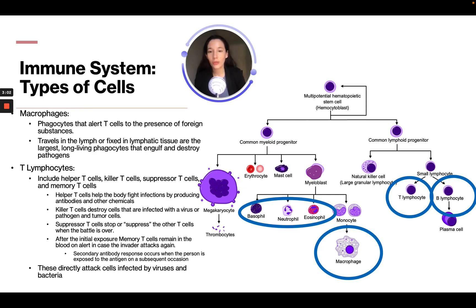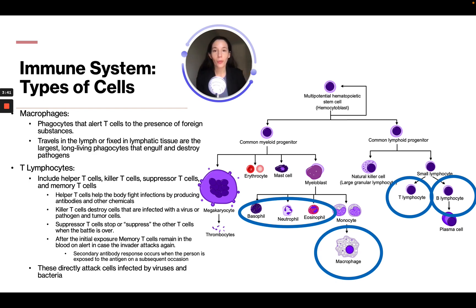T lymphocytes include helper T cells, killer T cells, suppressor T cells, and memory T cells. Helper T cells help the body fight infections by producing antibodies and other chemicals. Killer T cells destroy cells that are infected with a virus or pathogen and tumor cells. Suppressor T cells stop or suppress the other T cells when the battle is over. After the initial exposure, memory T cells remain in the blood on alert in case the invader attacks again — they remember what that attacker looks like, so if they see it again they know to respond.